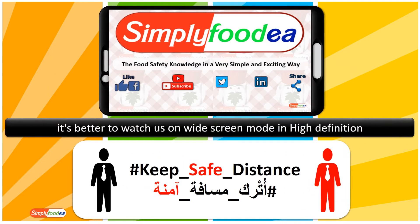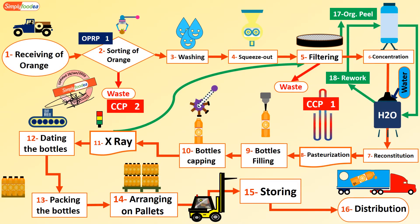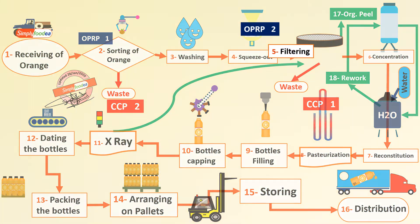Let's go directly to OPRP number two — the filtering step in our HACCP example — and discuss the corrective actions.